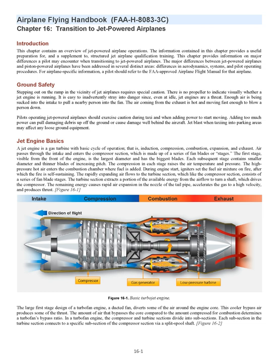Ground Safety. Stepping out on the ramp in the vicinity of jet airplanes requires special caution. There is no propeller to indicate visually whether a jet engine is running. Even at idle, jet engines are a threat — enough air is being sucked into the intake to pull a nearby person into the fan, and exhaust air is hot and fast enough to blow a person down. Pilots should exercise caution during taxi and when adding power, as jet blast may pull up damaging debris or affect loose ground equipment.